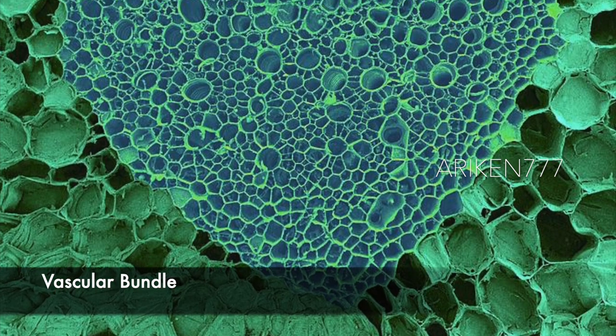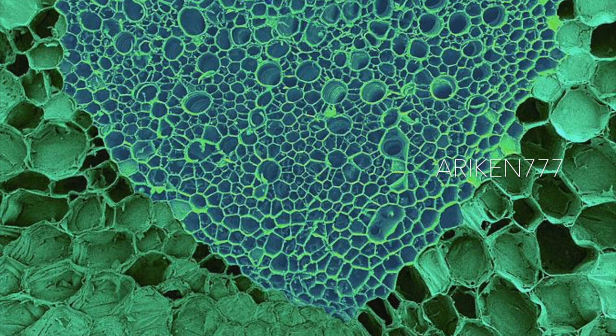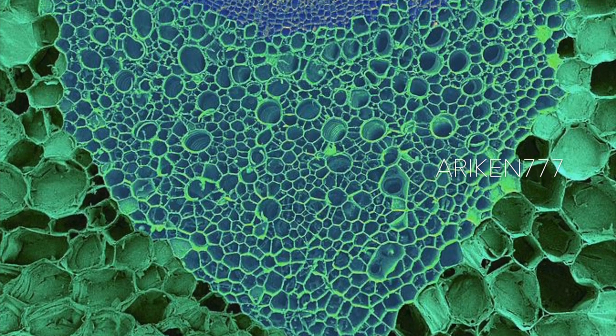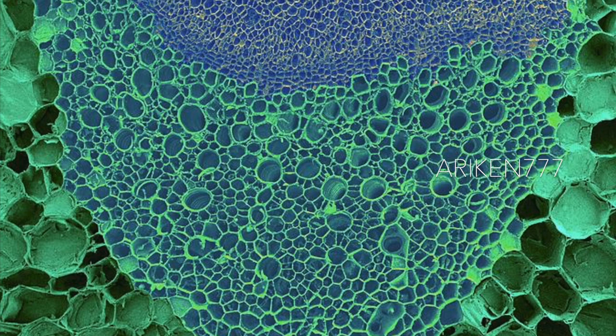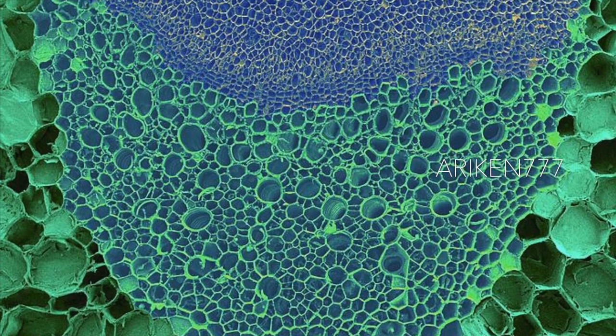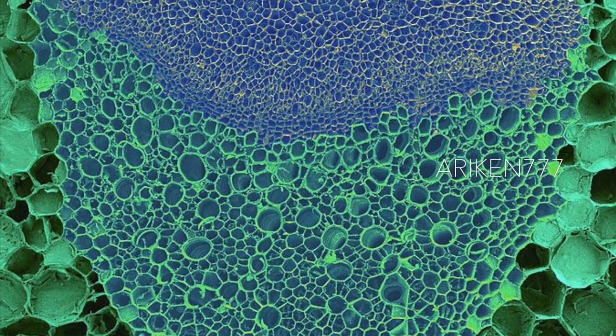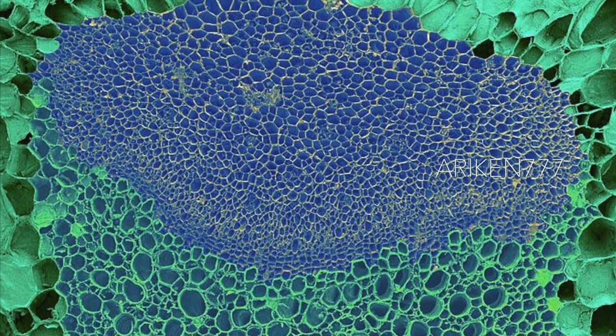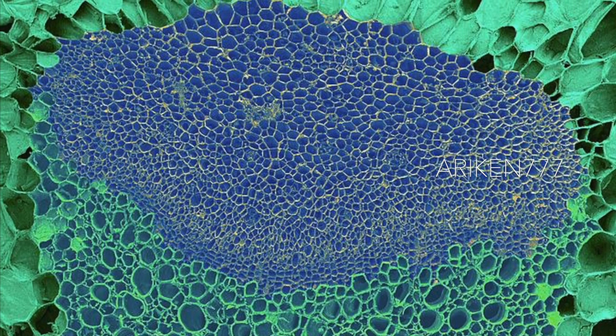Celery stalks have numerous vascular bundles which act as a transport system. Shown here is a single vascular bundle in a celery stalk. The vascular bundle contains two types of conductive tissue: phloem and xylem. Phloem, seen here in the top area, is tissue that transports larger organic molecules through the plant and is composed of several cell types. Xylem is tissue responsible for transporting water and nutrients through the plant, and consists of a variety of specialized water-conducting cells known as tracheary elements. Surrounding the vascular bundle are supporting plant collenchyma cells.